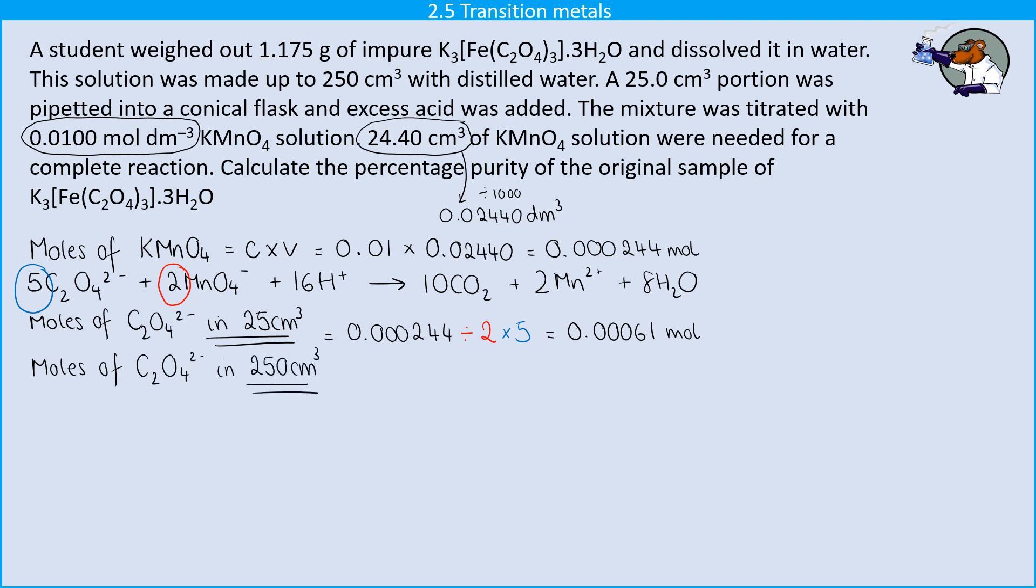Now, I'm going to work out how much is in 250 centimetres cubed, because remember, when we took that original sample, we didn't use that whole original 1.175 grams of sample in the titration. We used it to make a standard solution, and then we only used 10% of that standard solution in the titration. So here I'm going to multiply by 10, and obviously that's quite an easy calculation.